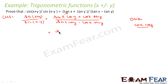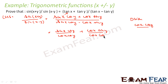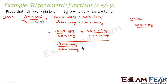So this becomes: [sin x · cos y / (cos x · cos y) + cos x · sin y / (cos x · cos y)] divided by [sin x · cos y / (cos x · cos y) − cos x · sin y / (cos x · cos y)]. We can see cos y and cos y cancel, and cos x and cos x cancel throughout.